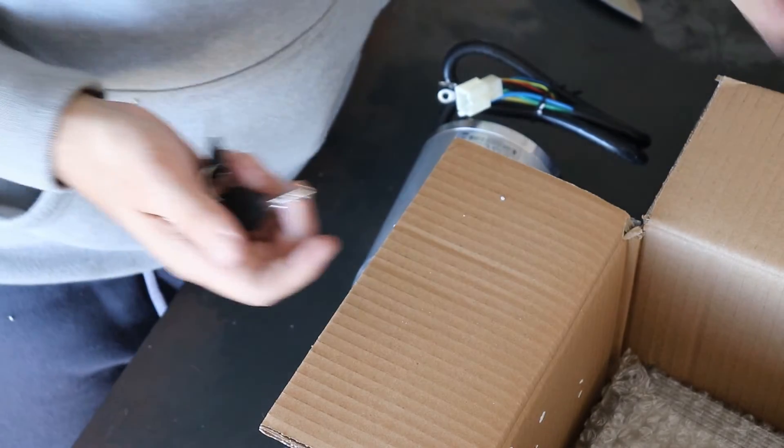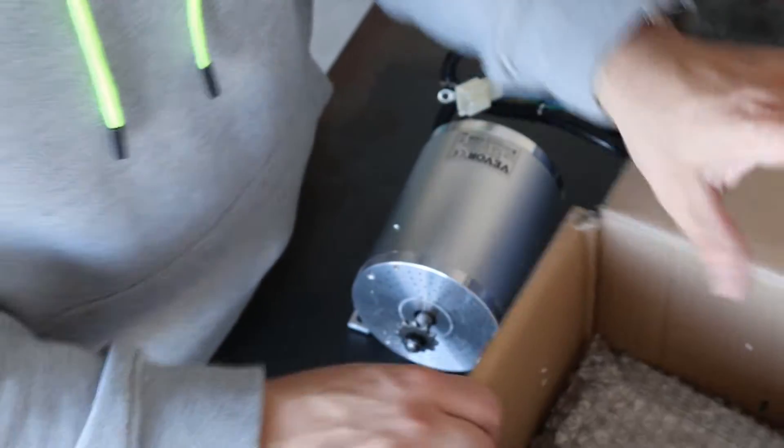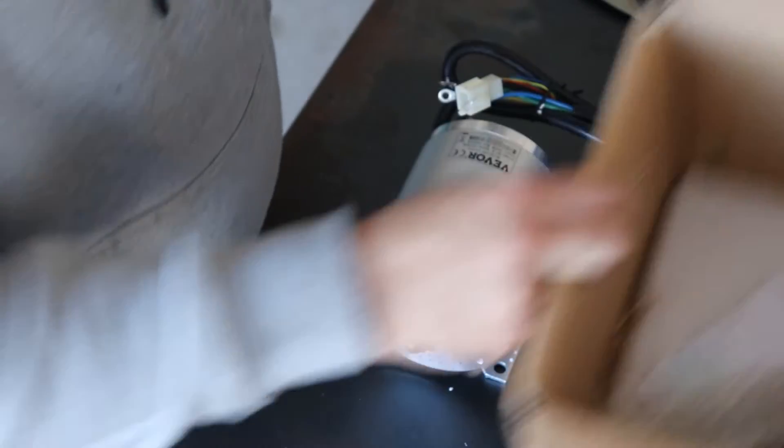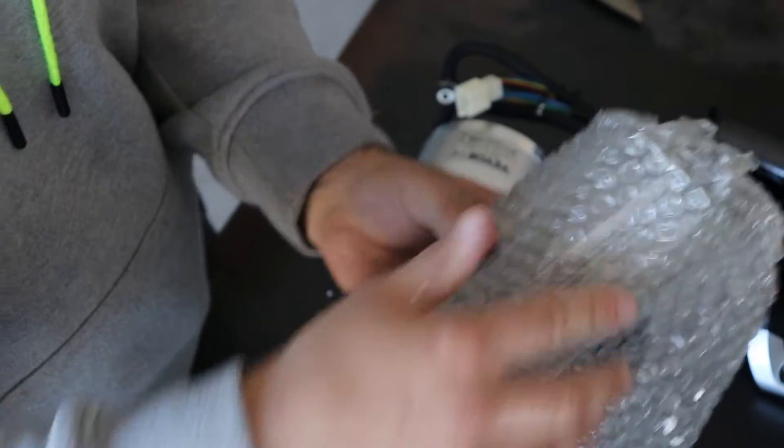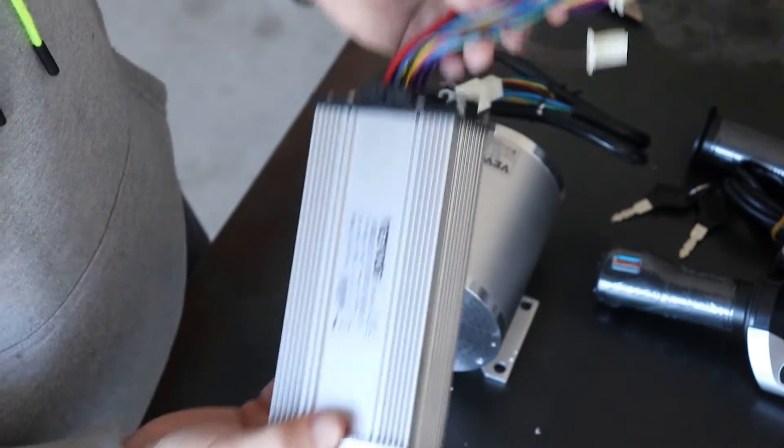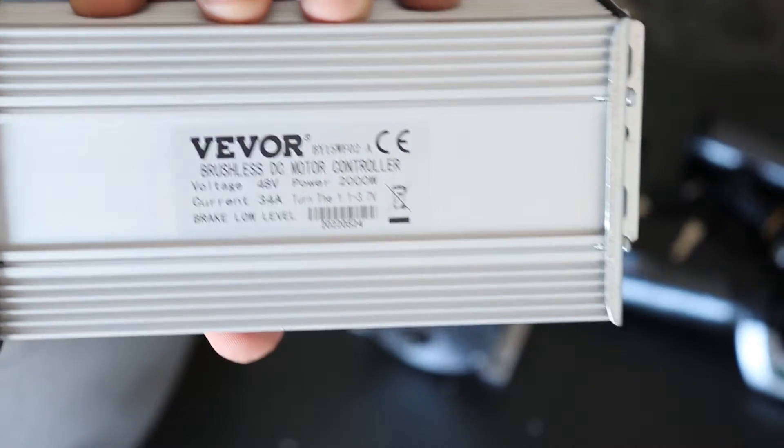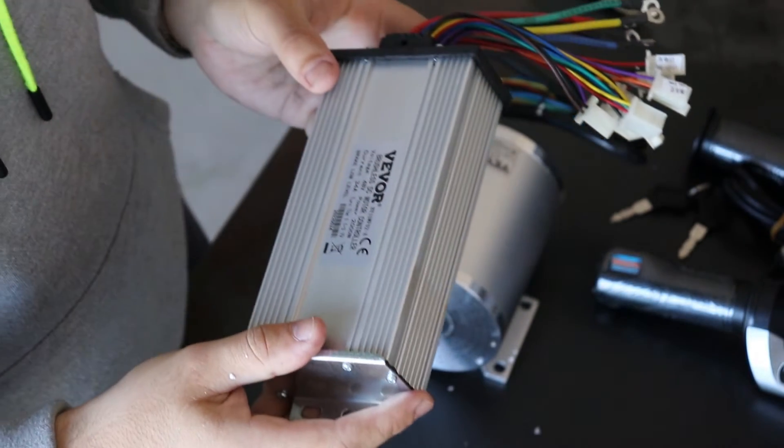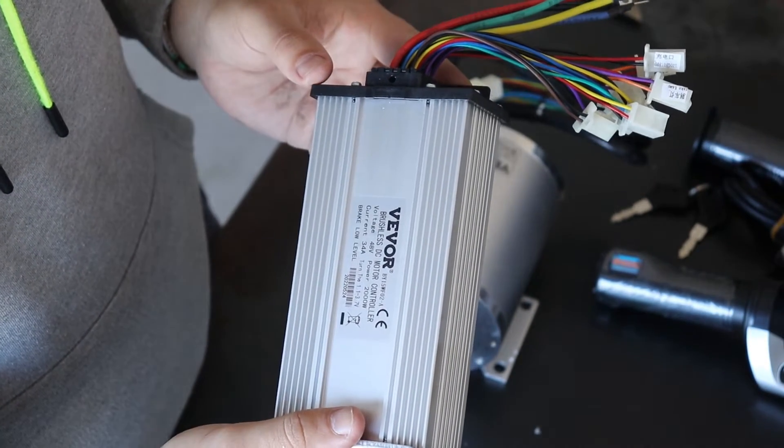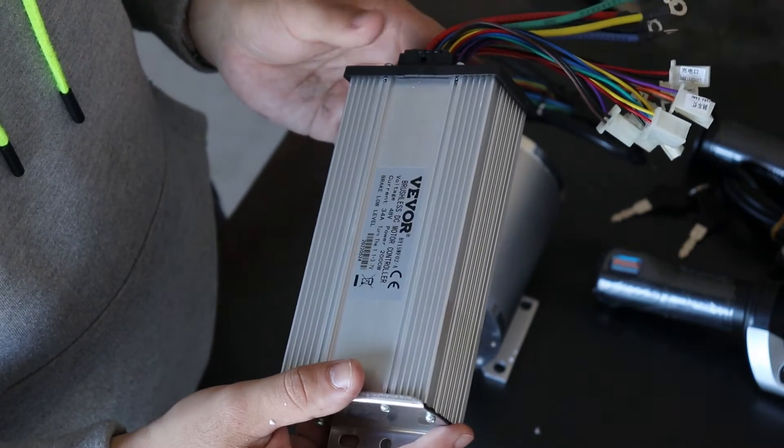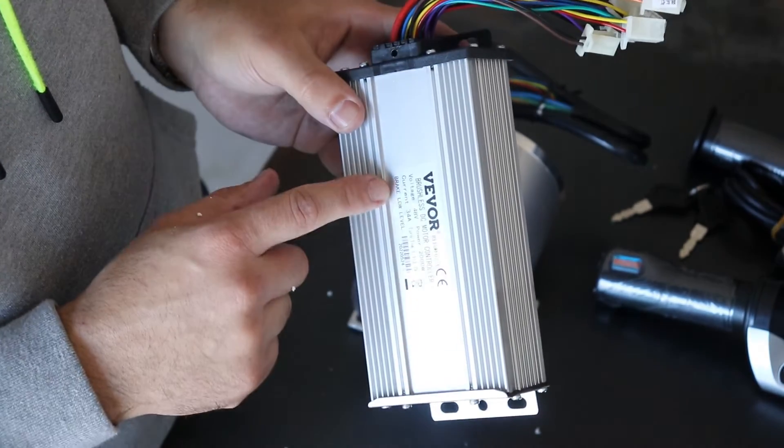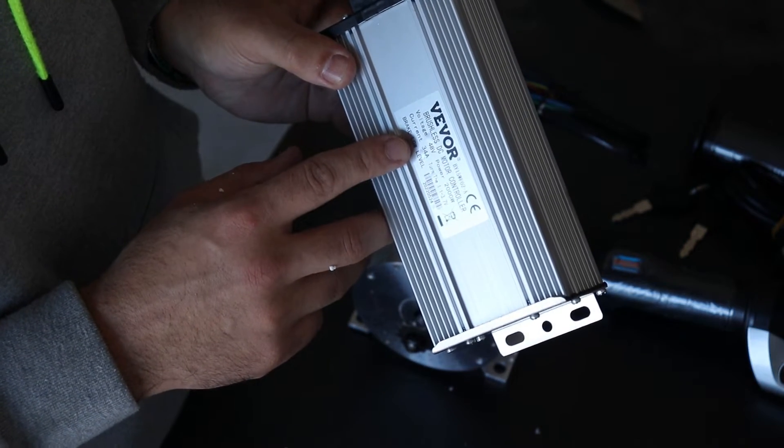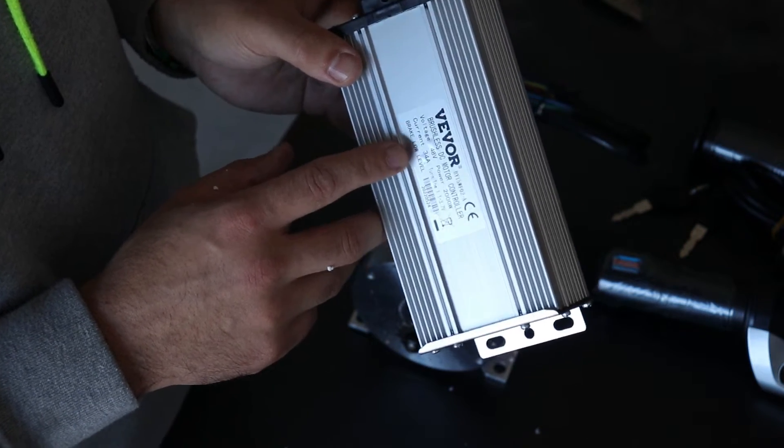If we keep going through the package, we've got the motor controller unit here, a bit like a VSD but for 48 volts. Varvel brand. All your connections here. I'll see if I can try and reverse that for the camera. We've got brushless DC motor controller, 48 volt power, 2000 watts rated to 34 amps allegedly. Low level tells you what's left in the battery, so battery capacity.